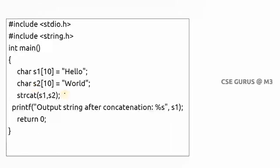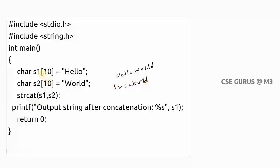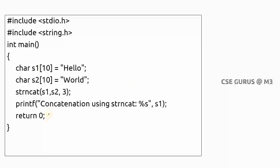Coming to the next one — strcat, string concatenation. Unlike strcpy which replaces, strcat adds: whatever is in s2 gets concatenated to s1. So if s1 is 'hello' and s2 is 'world', s1 will become 'hello world'. If you feel the space in s1 is not sufficient, you can declare it as s1[20]. After printing s1, the output will be 'hello world'.